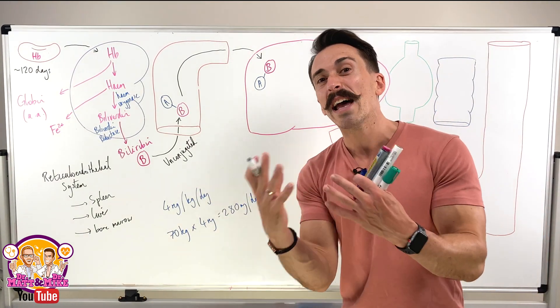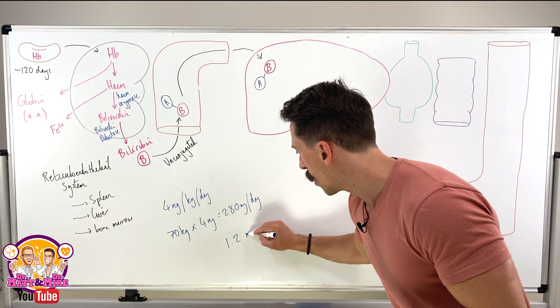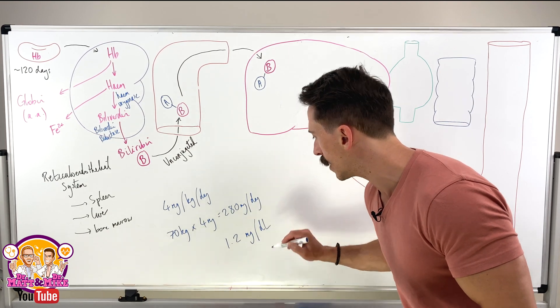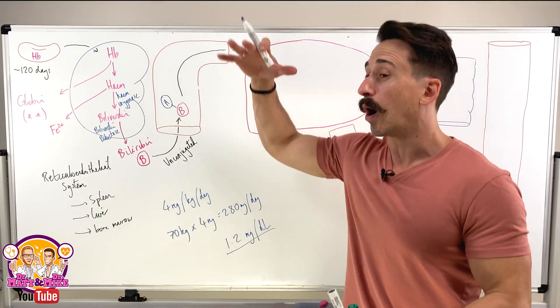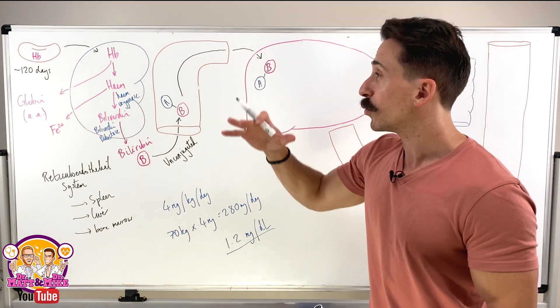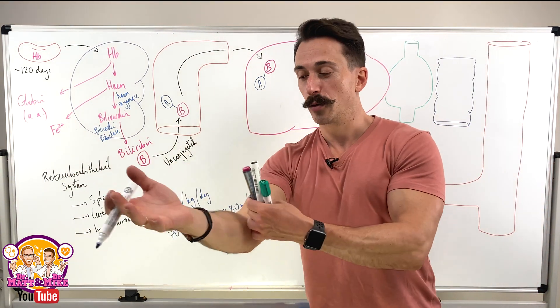Now normal levels in the blood, if I were to take your blood and measure bilirubin, it would be around about 1.2 milligrams per deciliter. That's normal. If this begins to go too high, this bilirubin can be deposited into our skin, into our conjunctiva, so our sclera, into our mucous membranes and we go yellow because bilirubin has a yellow colour to it.